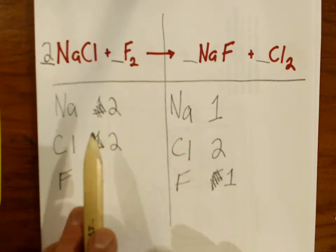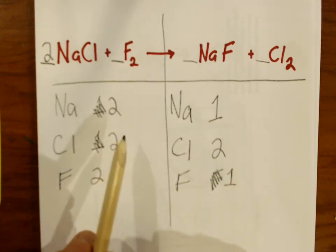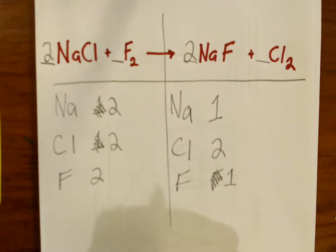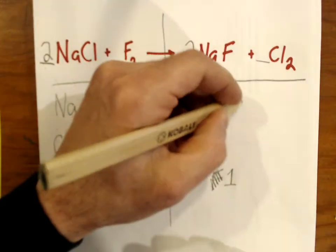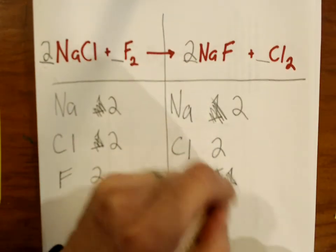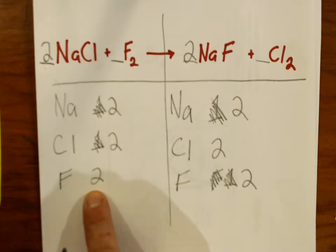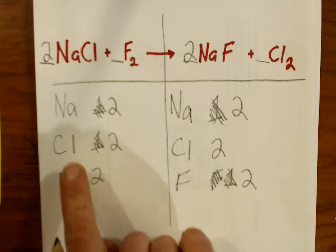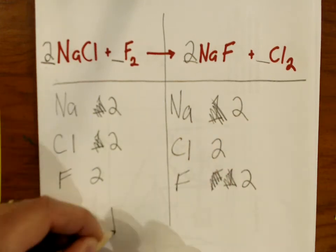That kind of messes up sodium. Sodium was balanced with one on each side, but now we've got two sodiums on this side and only one over there. So let's fix that — we can take this one sodium and turn it into two by putting a coefficient of two in front of sodium. The two in front of this compound will double everything in it, so sodium upgrades to two and so does fluorine — fluorine also becomes two. Now we've got two fluorines on the left side and two fluorines on the right side. Every element has an equal number on the reactant side as on the product side. This is a balanced equation.